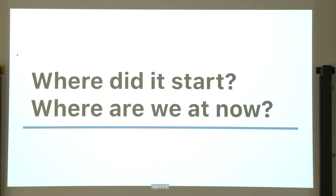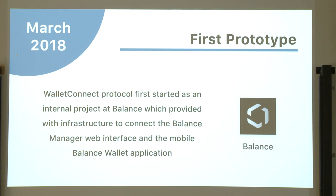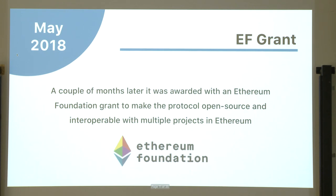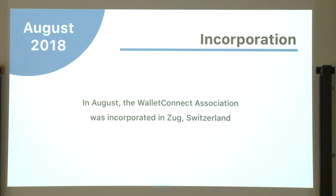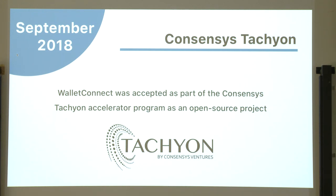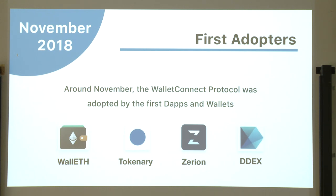The first prototype was at Balance, back in March 2018. I presented at DappCon — it was pretty novel but had no adoption at all. Then we got an EF grant and that's how I started working full-time on it. We released the alpha just a month later, and it was pretty bad honestly. In August the WalletConnect Association was incorporated, then Tachyon supported us with an open source grant in September. Those first adopters — Arkane, Tokenary, and dydx — were really crucial as we battle-tested the first version.